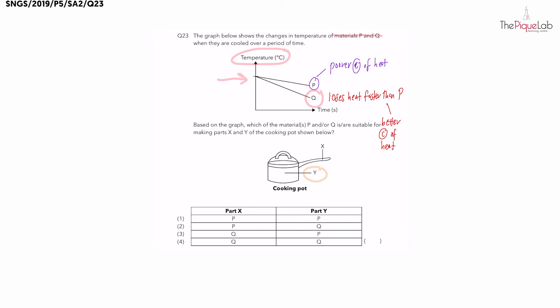So the food must be able to gain heat faster from the heat source. Yes, it needs to gain heat faster from the heat source, so the pot should be made out of the better conductor of heat. So part Y should be made out of material Q.